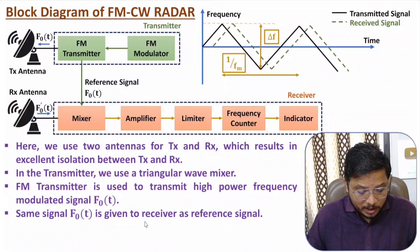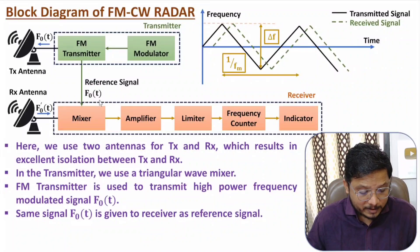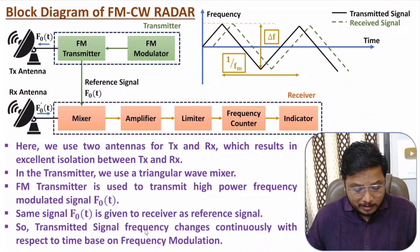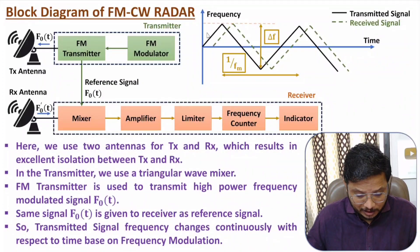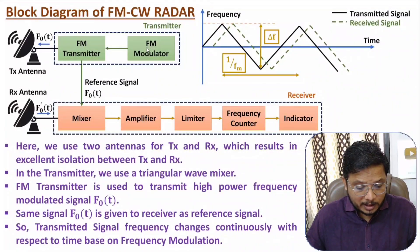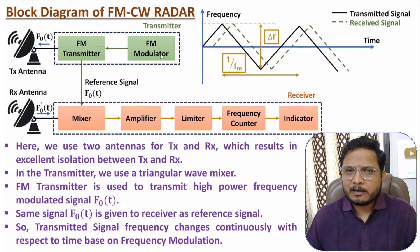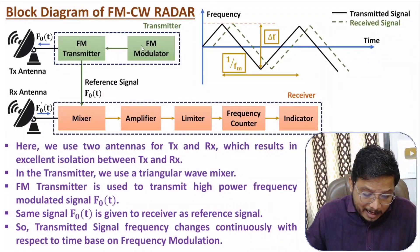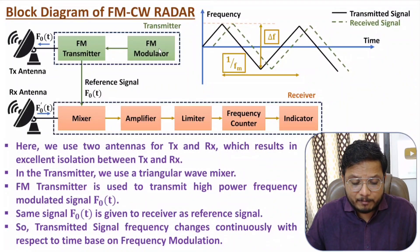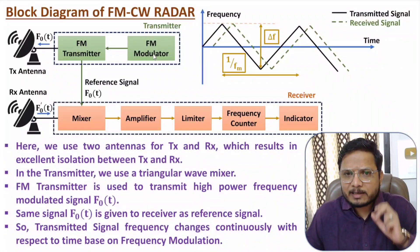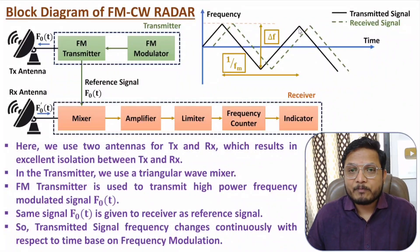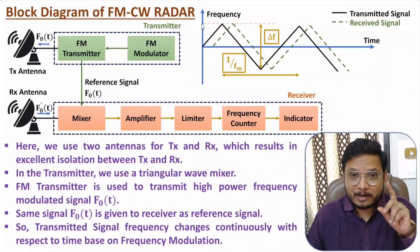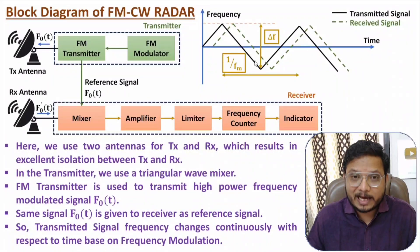The same F0(T) signal is also given to the receiver as a reference. In the receiver section, I will explain how it is useful. The transmitted signal has continuously changing frequency as per this triangular function, achieved using the FM modulator. The transmitter transmits a high power, frequency modulated signal. Note that this graph is not amplitude — it represents frequency deviation with respect to time.